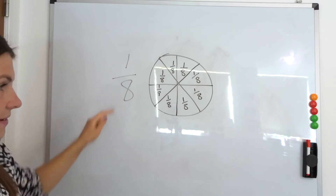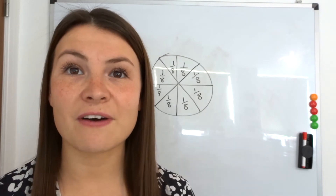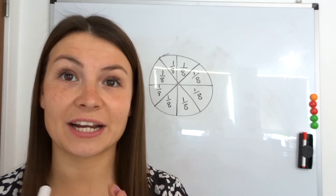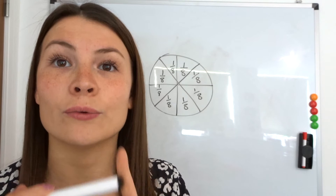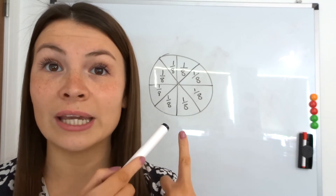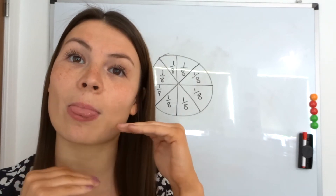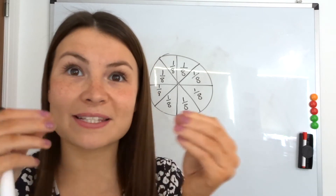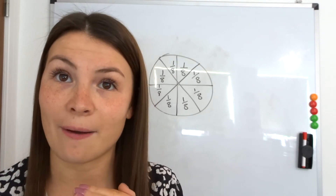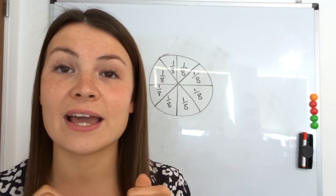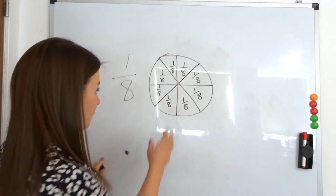How do we say that fraction? We say one eighth. So when we've got a shape split up like this, the method for finding out what the fraction is for each section is: first, find out the denominator. The denominator is always how many parts there are altogether. So this circle was split up into eight different parts, so that's always the number on the bottom - how many sections there are altogether.